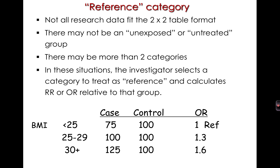Not all research data will fit into the 2x2 table format. There may not be an unexposed or untreated group, or there may be more than two categories. In these situations, the investigator selects a category to treat as reference and calculates risk ratio, odds ratio, or another measure relative to that group. For example, with body mass index — where everyone has body mass — a common approach is to create three categories: BMI less than 25, 25 to 29, and 30 plus. Taking the less-than-25 group as the reference category, we calculate the odds ratio for each other group relative to that reference, labeling the reference group with a value of one.